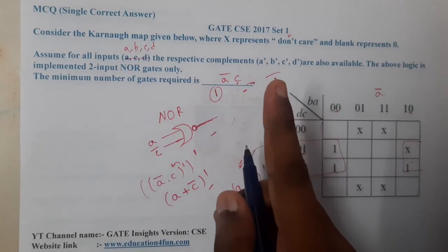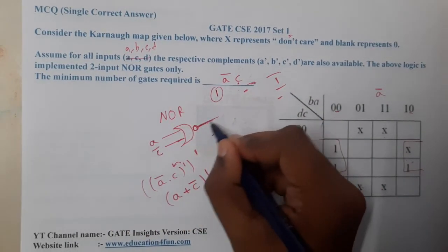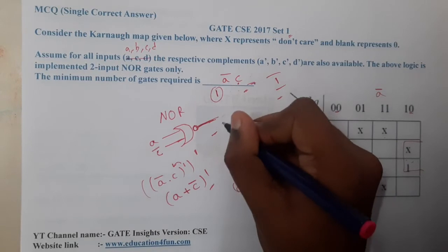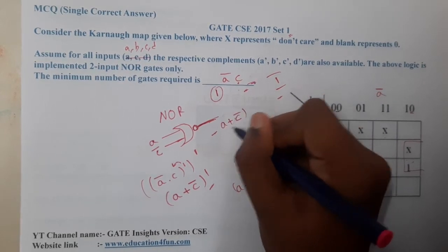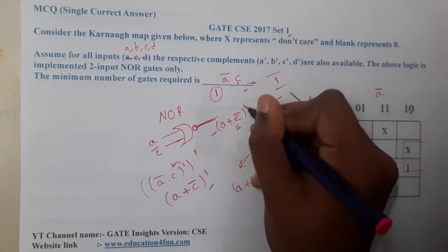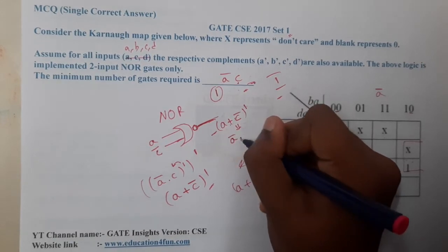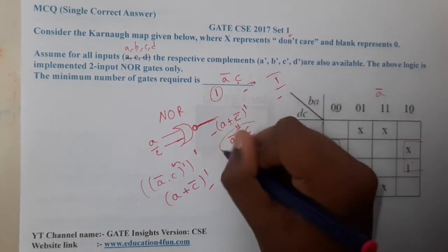is 1. The answer is 1. Most of you will be saying, 'Please confirm this one, sir.' So if you apply this inside, it is nothing but (a + c')', right? If you apply that complement inside, a becomes a', plus becomes dot, c' becomes c. So a'·c,